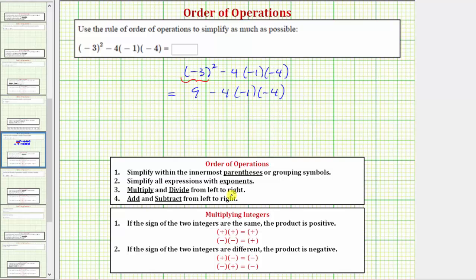Step three we multiply and divide from left to right and notice how we have multiplication here. We have nine minus four times negative one times negative four. So for our next step we'll simplify this product multiplying from left to right. So we have nine minus, and then four times negative one times negative four is equal to positive sixteen. So the expression simplifies to nine minus positive sixteen.